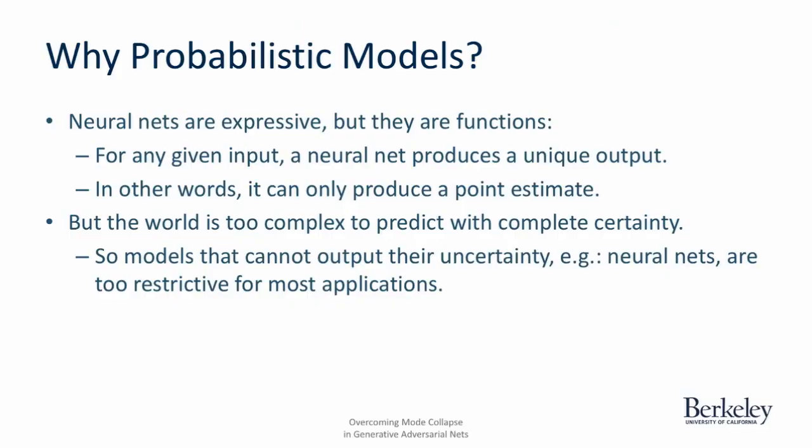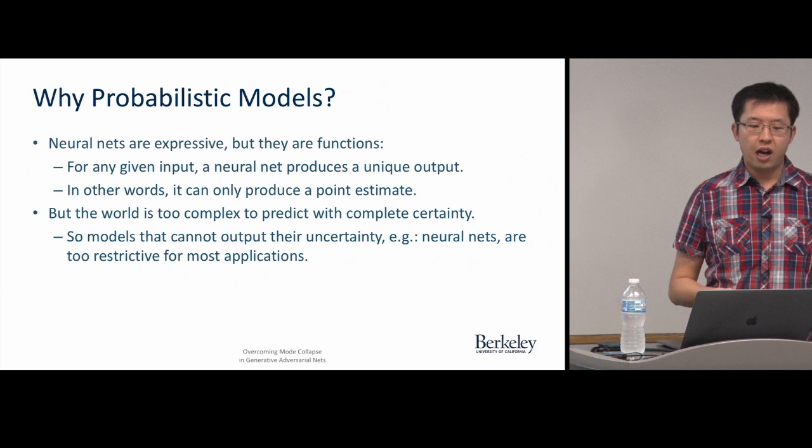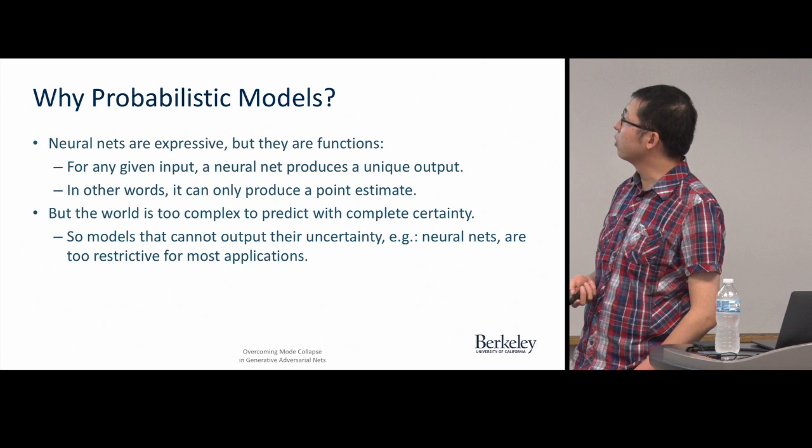Let me give a brief overview of probabilistic modeling. Why do we care about probabilistic models? The most popular class of models used today are neural nets. They're great in that they're expressive, but they're just functions — for any given inputs, you can only have a unique output. In other words, we can only produce a point estimate using vanilla neural nets. But the world is too complex to predict with complete certainty, so models that can't output their uncertainty are really too restrictive for most applications.